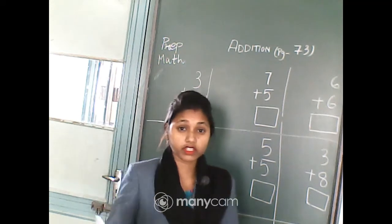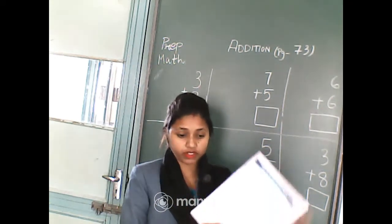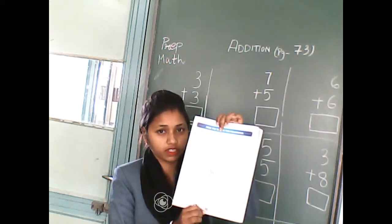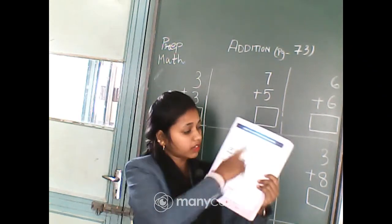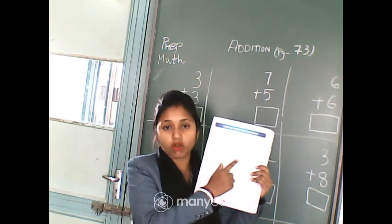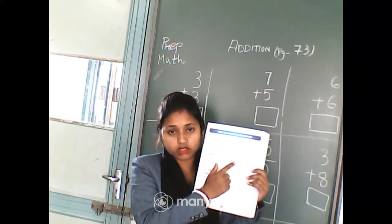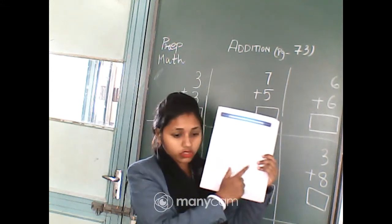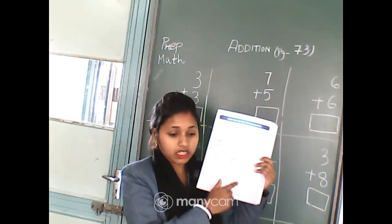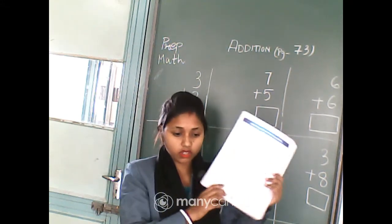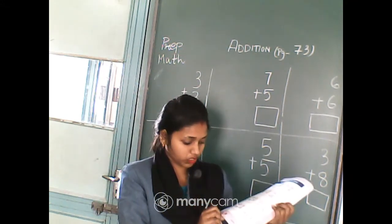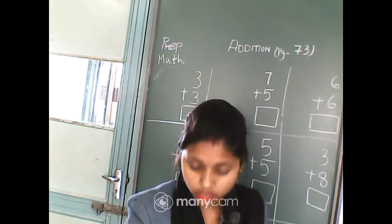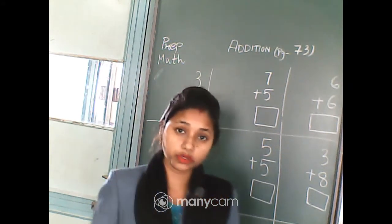So get ready with your maths textbook, page number 73. Yesterday we have done with these two boxes, these two lines. Today we will do these six sums. So page number 73. Now you will do with me.